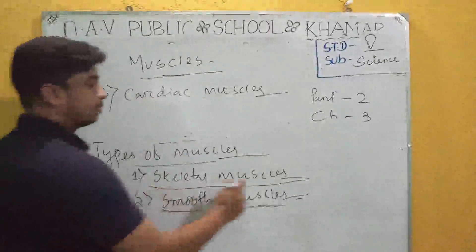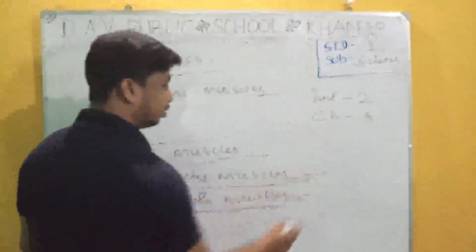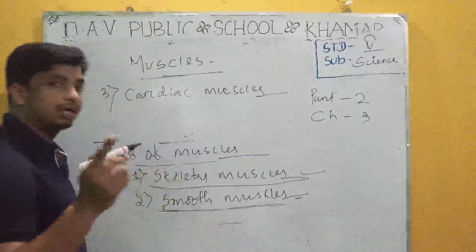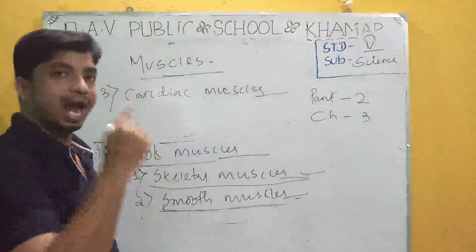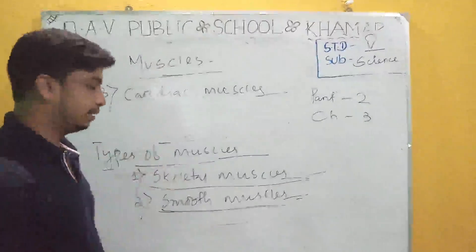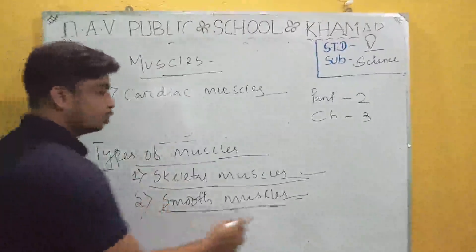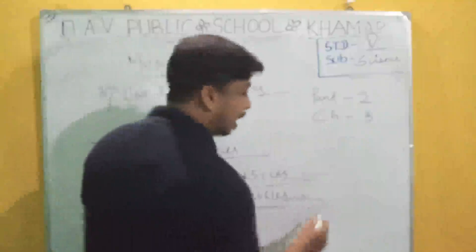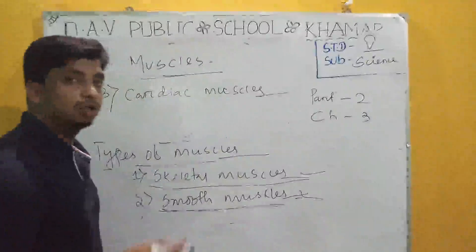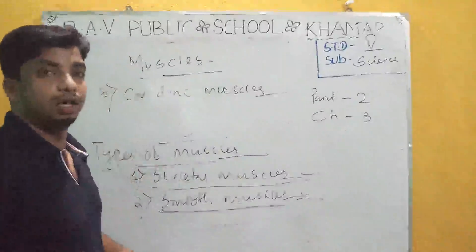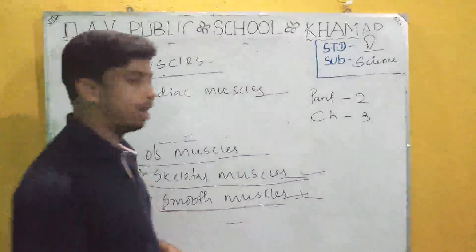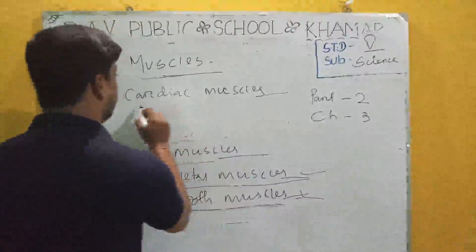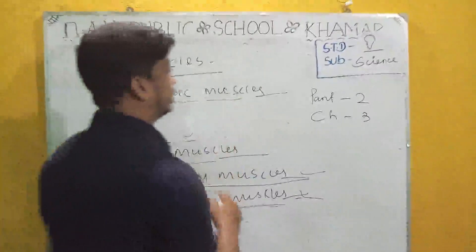We learned about three types of muscles: skeletal muscles, which are present between bone and skin; smooth muscle, which are the muscles of the stomach and intestines; and cardiac muscle, which is the heart muscle.